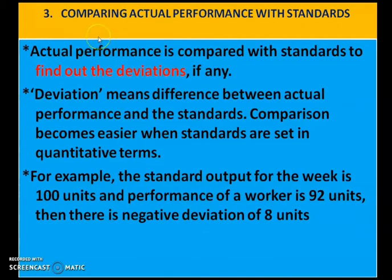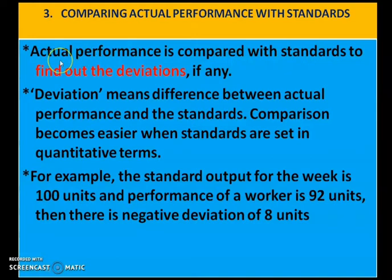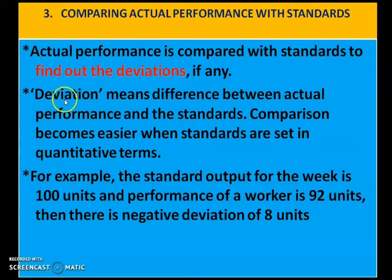The third step of controlling is comparing actual performance with standards. Actual performance is compared with standards to find out the deviation, if any. In the first step we set the standard, in the second step we measured actual performance, and in the third step we compare these two. Deviation means the difference between the actual performance and the standard. Comparison becomes easier when standards are set in quantitative terms.